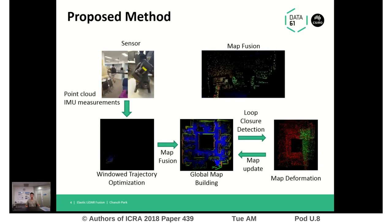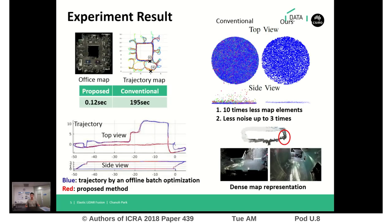Here are some experimental results. First, we compare the loop closure costs in a multiple-travel scenario. The proposed method is way faster than the conventional global trajectory optimization method, as the loop closure cost does not increase over time but only depends on the size of the space.